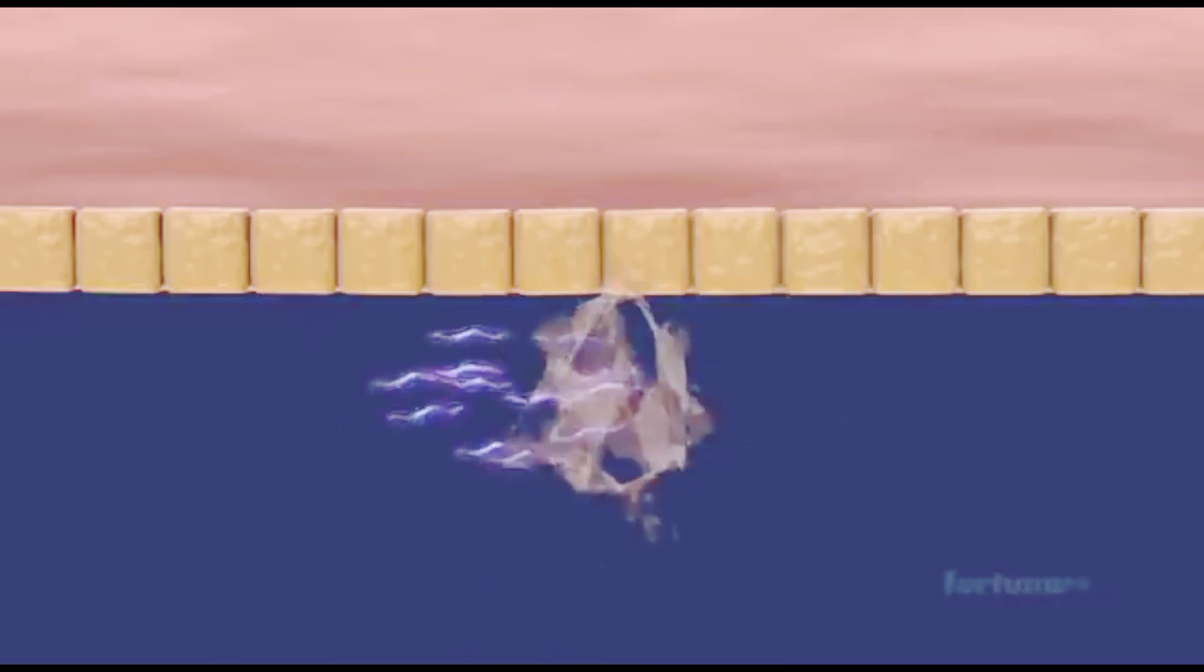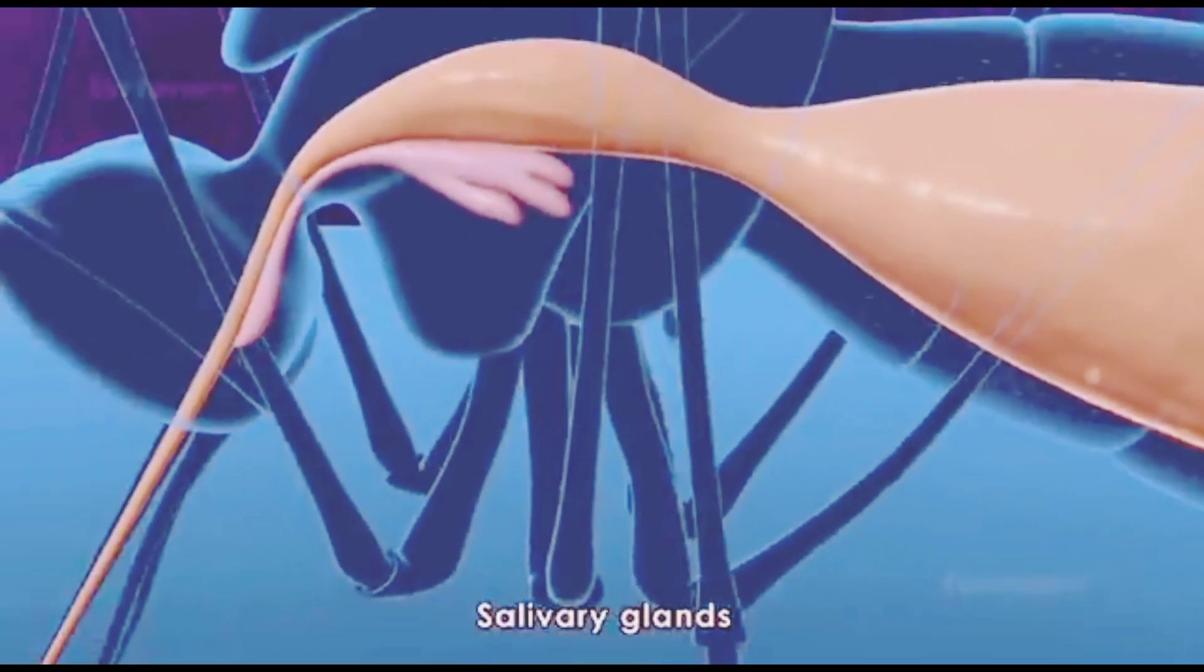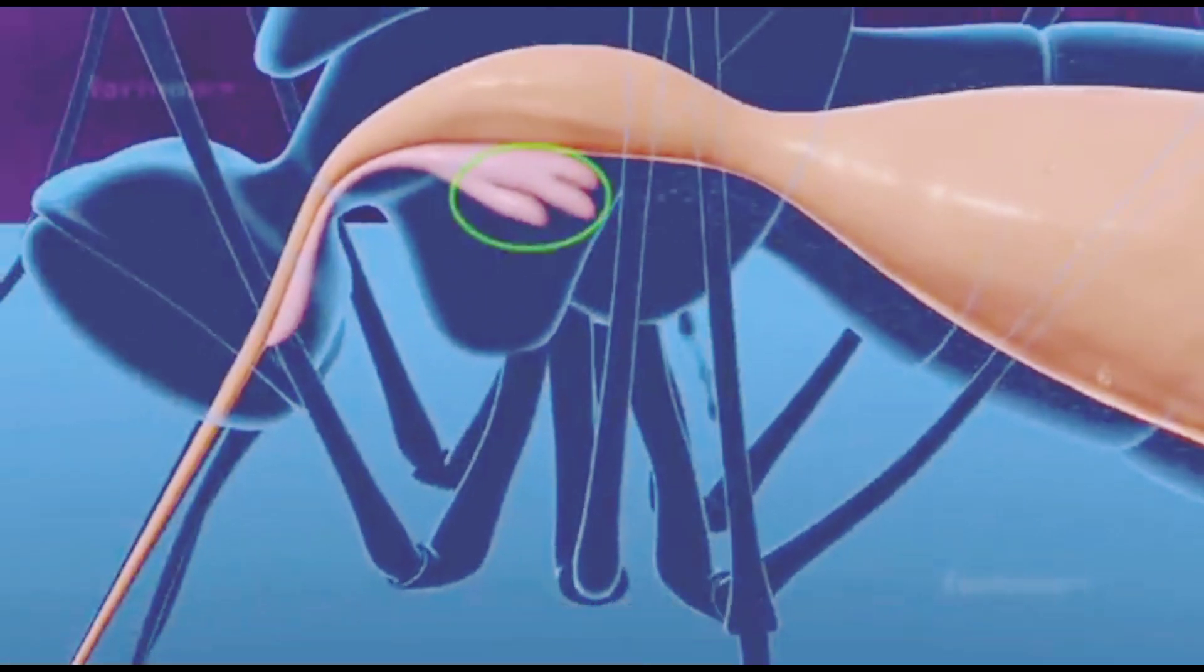The sporozoites will rupture the oocysts and move to the salivary glands where they will wait to be injected into a new human host.